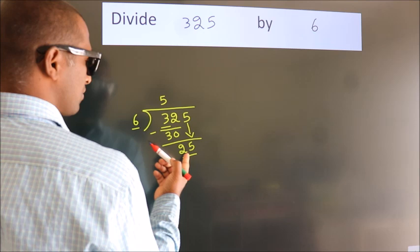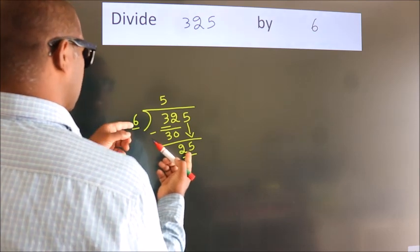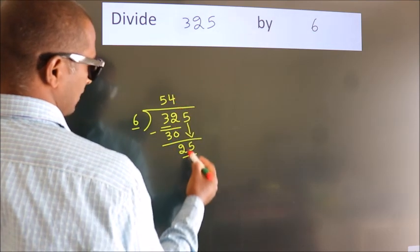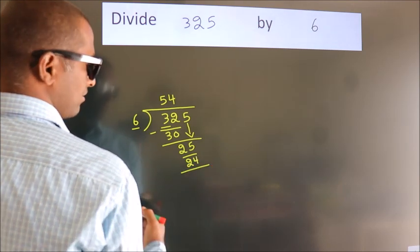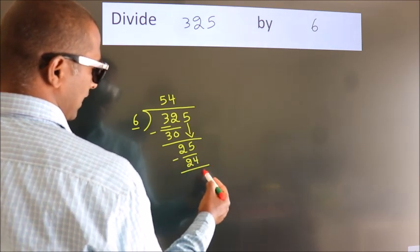A number close to 25 in the 6 table is 6 fours, 24. Now, we subtract. We get 1.